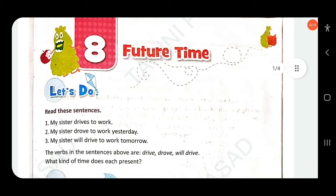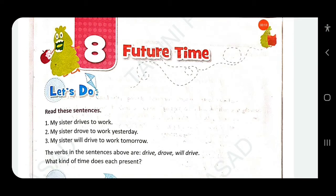So here I will read the sentences. 'My sister drives to work.' This is simple present. 'My sister drove to work yesterday.' This is simple past. 'My sister will drive to work tomorrow.' This is simple future.